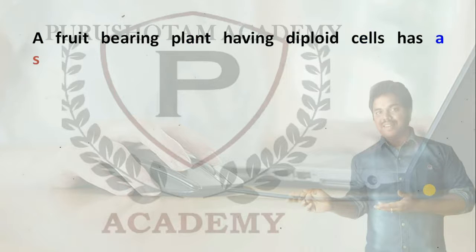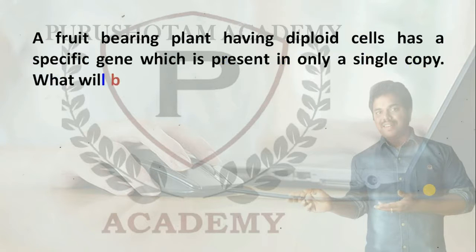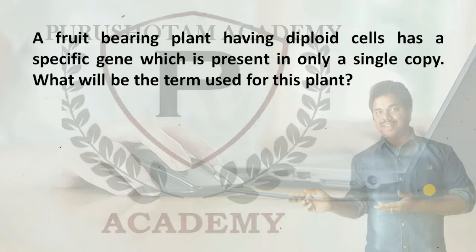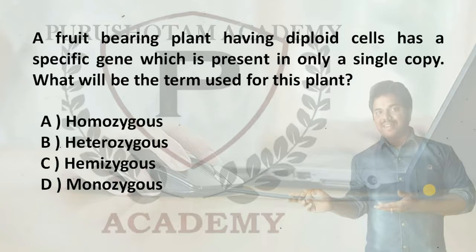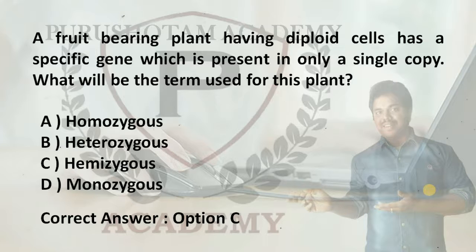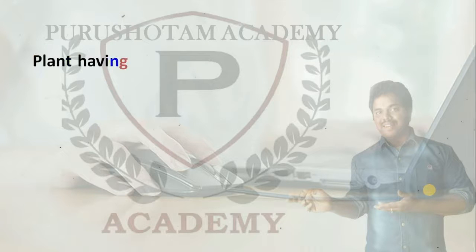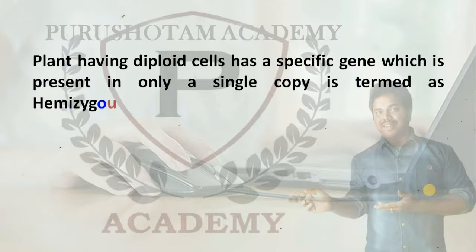Next question: a fruit-bearing plant having diploid cells has a specific gene which is present in only a single copy. What will be the term used for this plant? Option A: homozygous. Option B: heterozygous. Option C: hemizygous. Option D: monozygous. The right answer is Option C, hemizygous. Explanation: a plant having diploid cells with a specific gene present in only a single copy is termed as hemizygous.